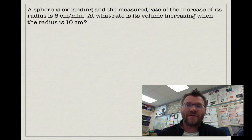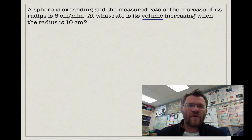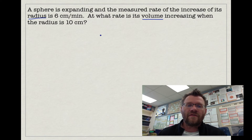A sphere is expanding and the measured rate of increase of its radius is 6 centimetres per minute. At what rate is its volume increasing when the radius happens to be 10 centimetres? The key words here are volume and radius, so we need an equation for a sphere that relates volume and radius. The volume of a sphere is 4/3 π r cubed.